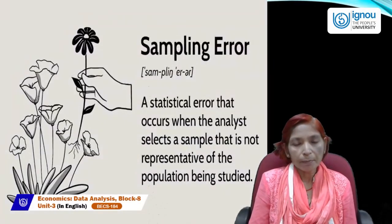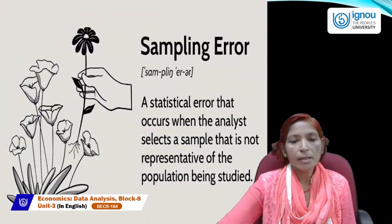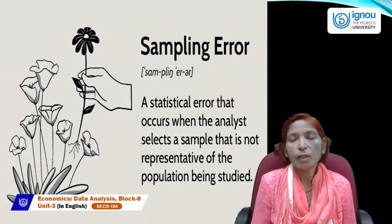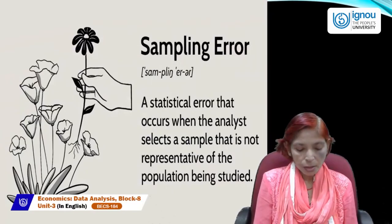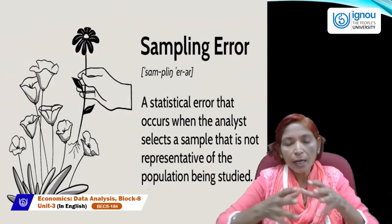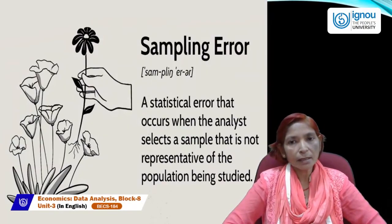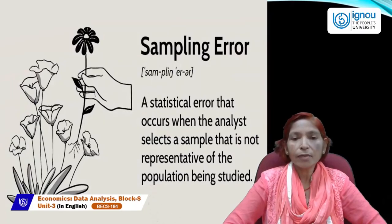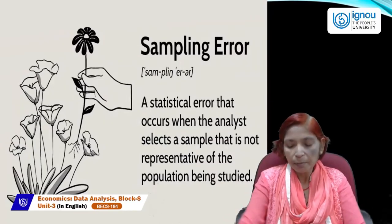Sampling error exists when the analyst selects a sample that is not representative of the population being studied. Sampling error generally occurs when samples are not accurately collected — when there is bias or the sample size is not good or accurate.